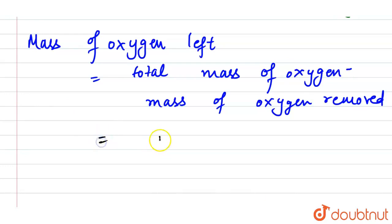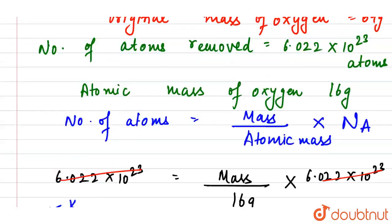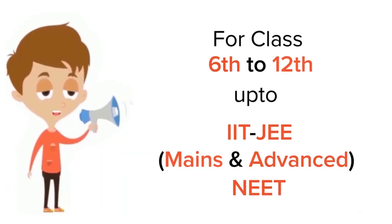64 minus 32 equals 32 grams. So 32 grams of oxygen is left in the container. The answer is 32 grams.